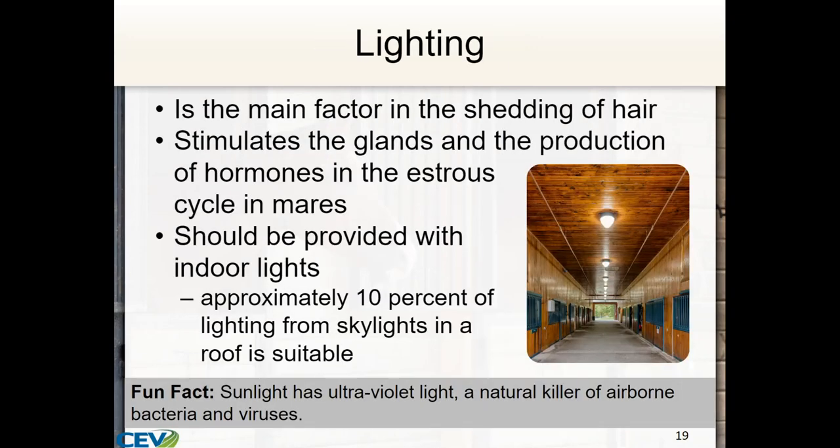Lighting is the main factor in the shedding of hair. Lighting can also stimulate the glands and production of hormones that cause the estrus cycle in mares — when they're cycling, they're shedding hair. Your barn should be provided with indoor lights, and approximately 10% of lighting should come from skylights if available. Sunlight also has ultraviolet light, which is a natural killer of airborne bacteria and viruses — a nice side benefit.